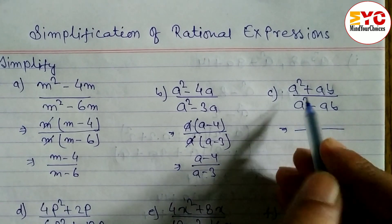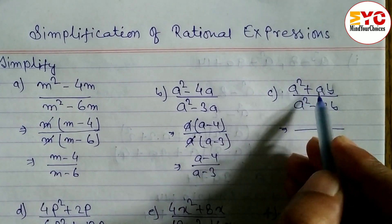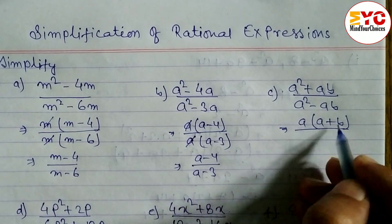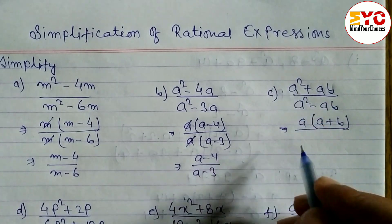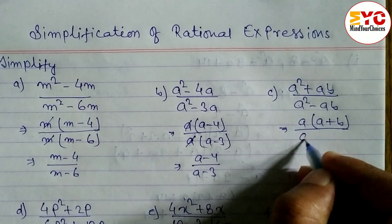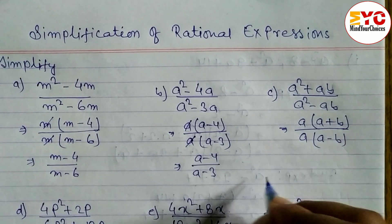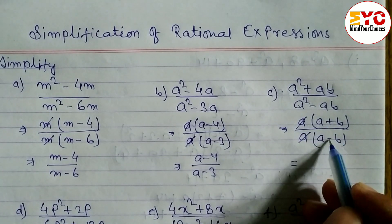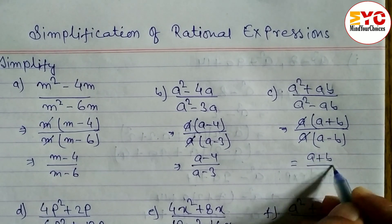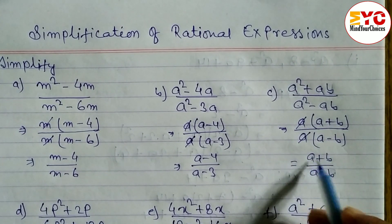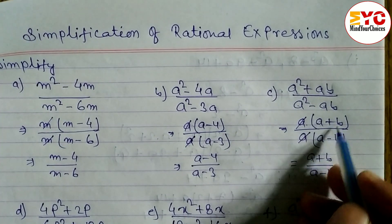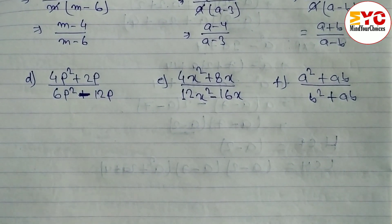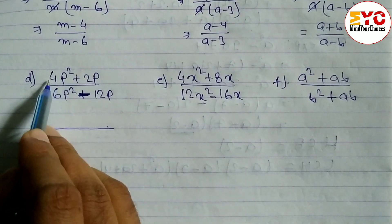Question number c: a squared plus ab — the lowest power is a to the 1, so a is the common factor, leaving a plus b, because a times a is a squared and a times b is ab. Similarly, a squared minus ab: take a common, leaving a minus b. Now we cancel the two a's, but we cannot cancel a plus b and a minus b because one is plus and one is minus. With multiplication we can cancel, but with addition and subtraction there are two terms, so we cannot cancel. The answer is a plus b over a minus b.